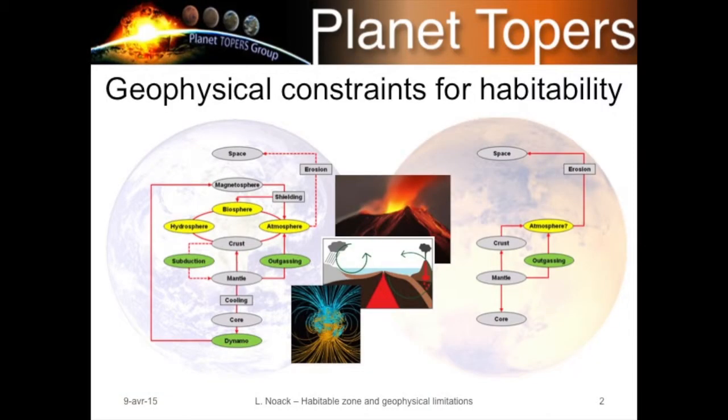This is about habitability constraints for more complex life, like we have on Earth. The geophysical feedbacks between the surface of a planet and its interior are key. On Earth, we have plate tectonics and subduction: the hydrated crust is subducted into the mantle, leading to volcanic outgassing that feeds the atmosphere and hydrosphere. Subducting cold crust also efficiently cools the mantle and core, helping maintain a magnetic dynamo over long timescales, which produces the magnetosphere that shields the biosphere and atmosphere from erosion.